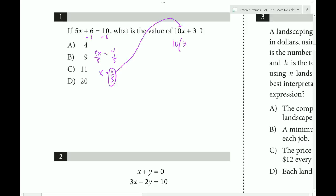So we get 10 times 4/5 plus 3. We can do 10 divided by 5 first, which gives 2. 2 times 4 equals 8, and 8 plus 3 equals 11. Answer choice C.